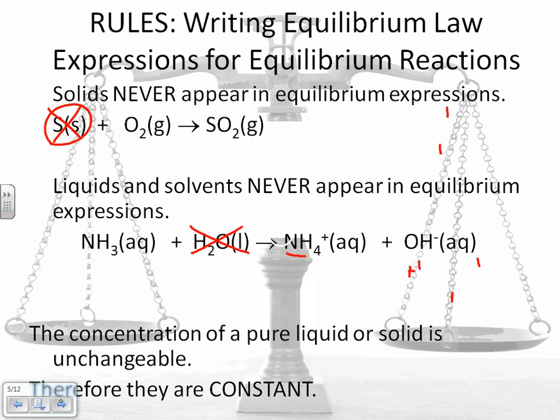There are some rules. First, it always has to be products on the top and reactants on the bottom. Solids never appear in equilibrium expressions, and liquids and solvents never appear in equilibrium expressions. Why is this? Basically, the concentration of a pure liquid or solid is unchangeable. In fact, we usually measure solids with mass, not with concentration. So therefore, they're constant and they're not put into the equilibrium expressions.